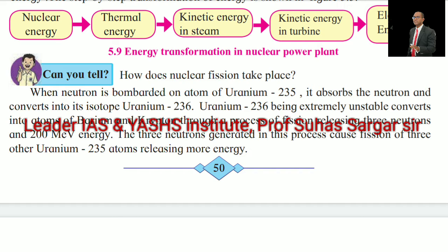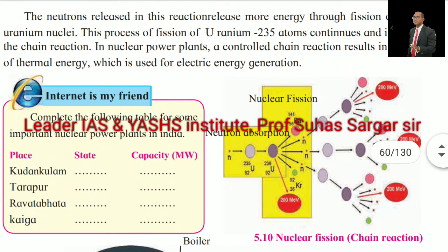How does nuclear fission take place? When a neutron is bombarded on an atom of uranium-235, it absorbs the neutron and converts into the isotope uranium-236. Uranium-236, being extremely unstable, converts into atoms of barium and krypton through a process of fission, releasing 3 neutrons and 200 MeV of energy. The 3 neutrons generated in the process cause the fission of 3 other uranium-235 atoms releasing more energy. This process of fission of uranium-235 atoms continues and is called the chain reaction. In nuclear power plants, the controlled chain reaction results in the release of thermal energy, which is used for electrical energy generation.